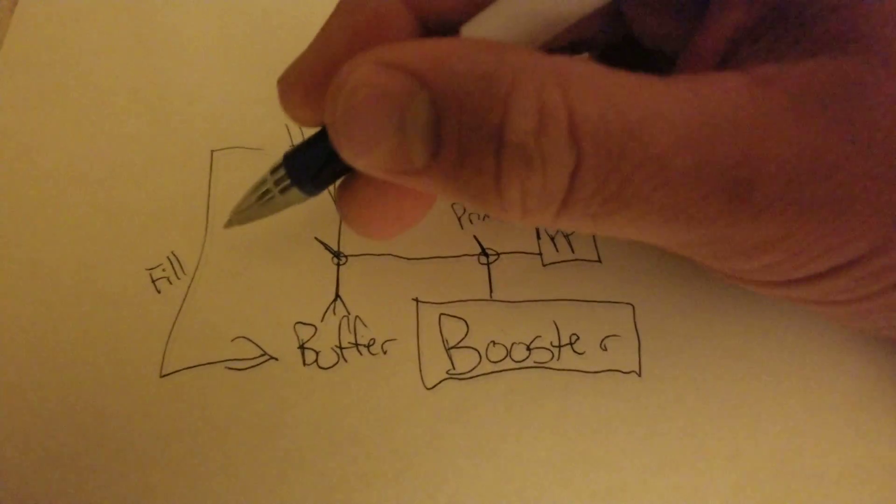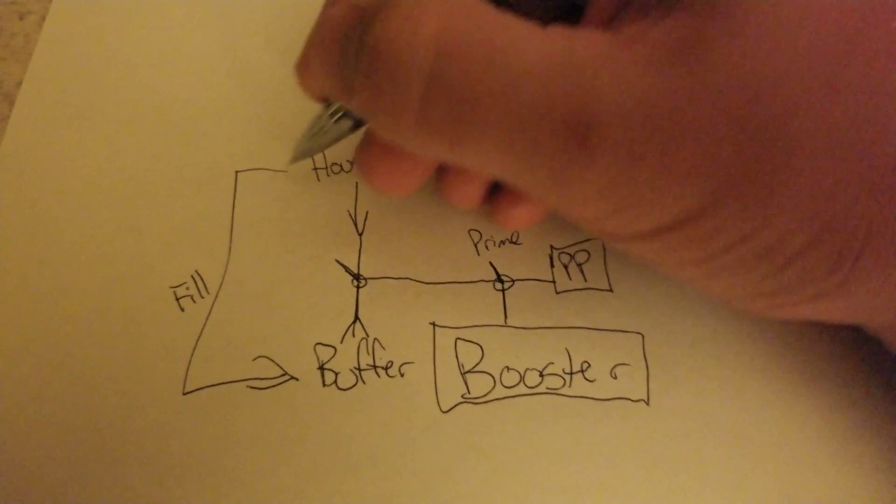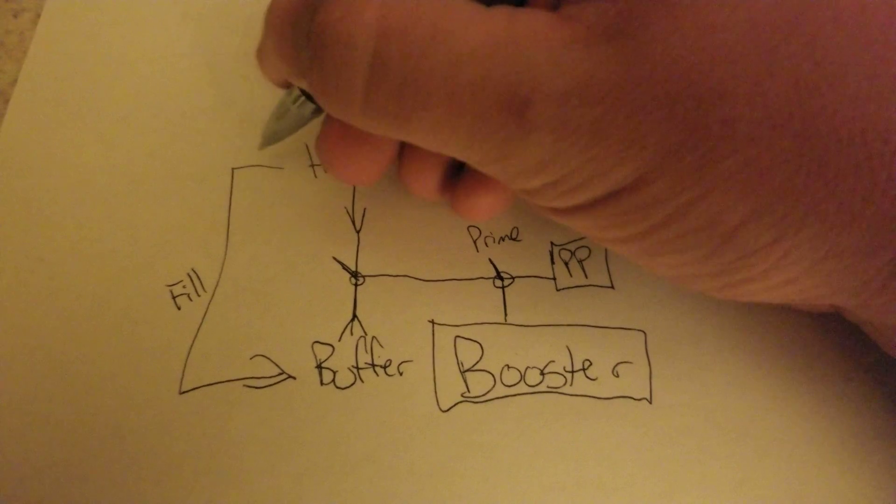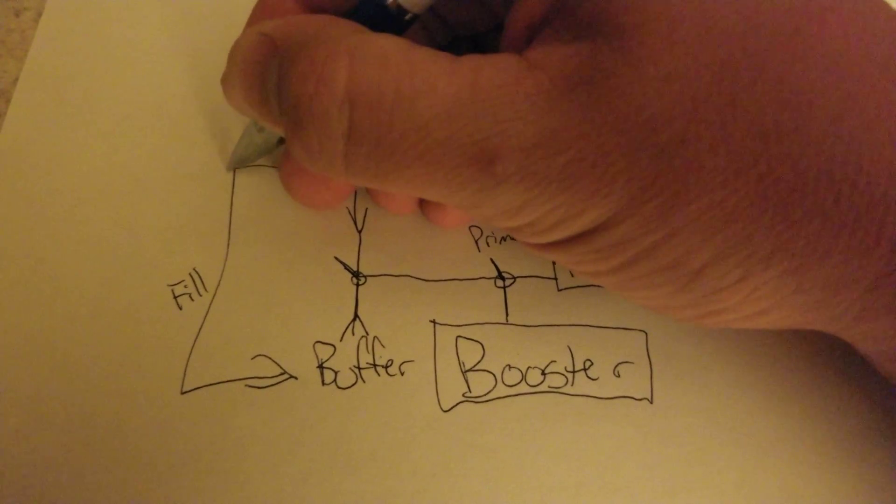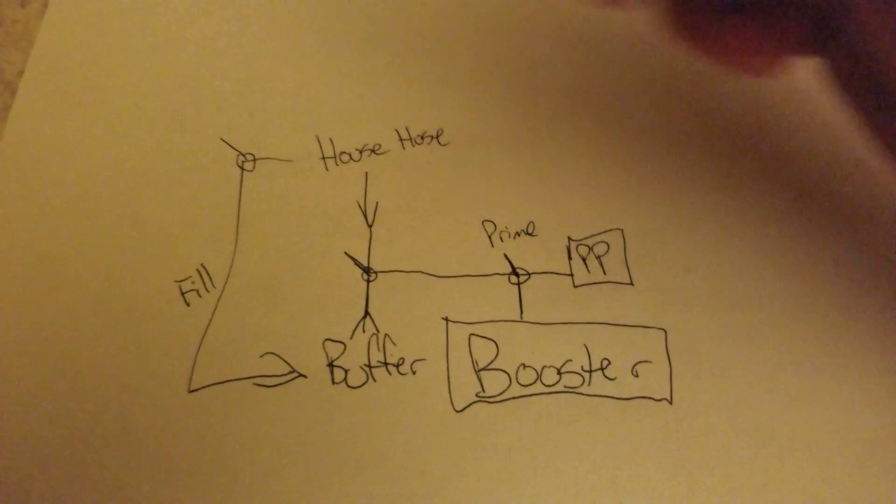So if I really need to prime it right then, I can shut this line off. So that's just a single-way ball valve.